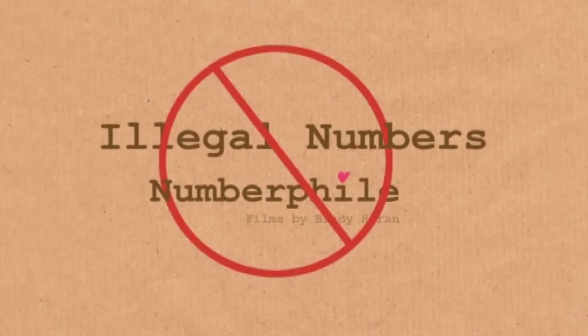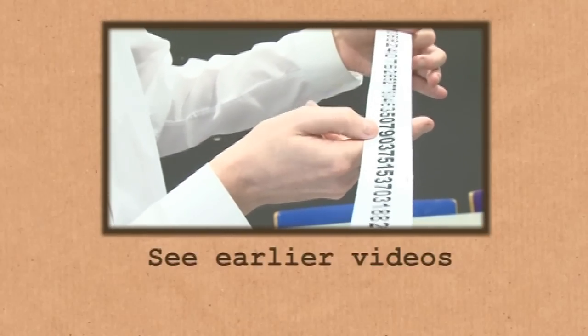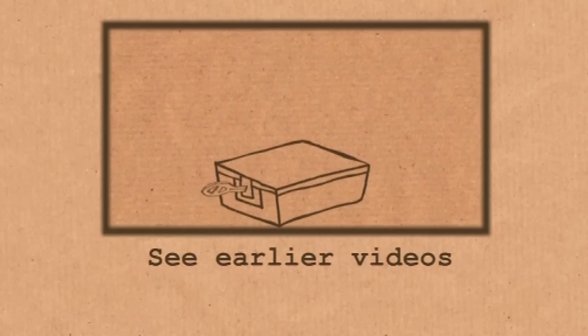We're going to talk about illegal numbers. When I heard that there were these things — illegal numbers, that some numbers were illegal — I was shocked and surprised. Today, in the modern world, numbers are used as keys to encrypt secret information. They're used to encrypt or protect DVDs so that you can't illegally copy films. You need to protect those keys, so if you distribute those secret numbers, this is a real problem. Some people are claiming that it would be illegal to distribute those numbers, and so it's the number itself that becomes illegal.